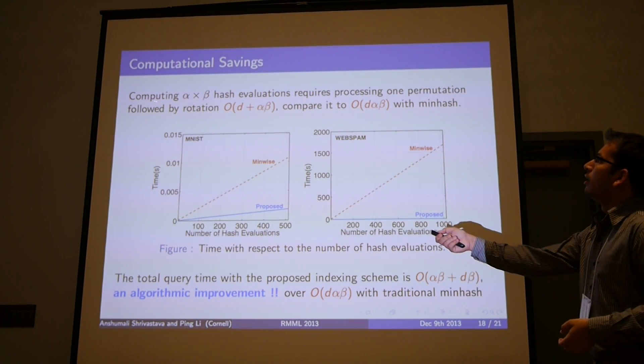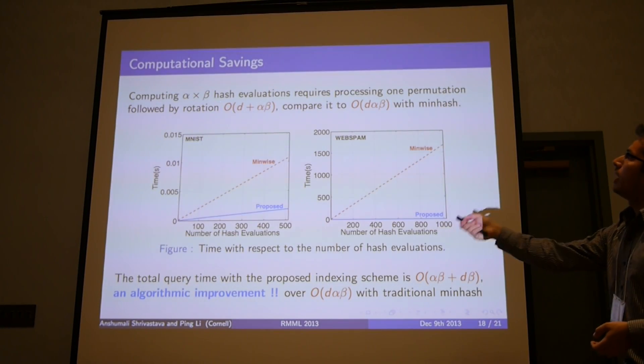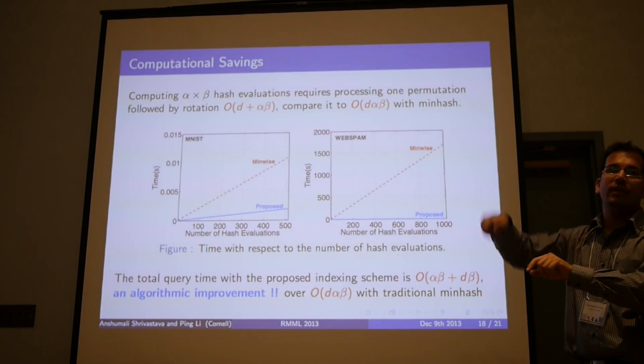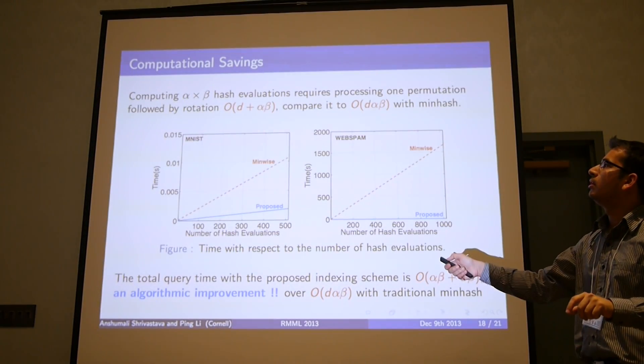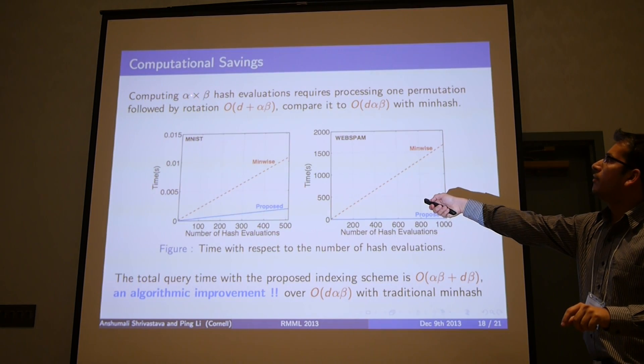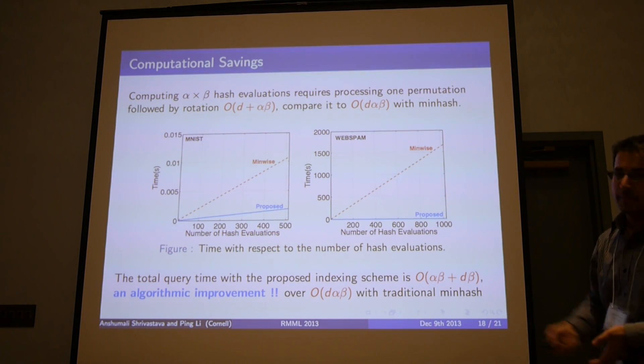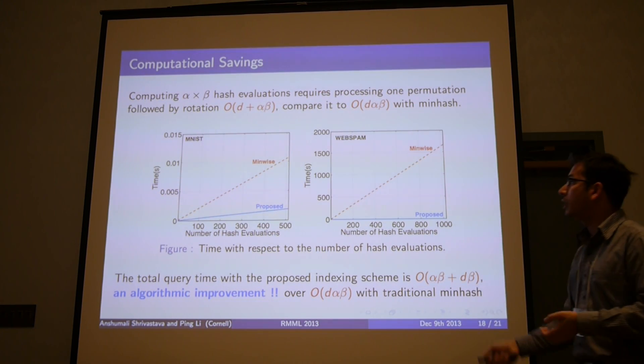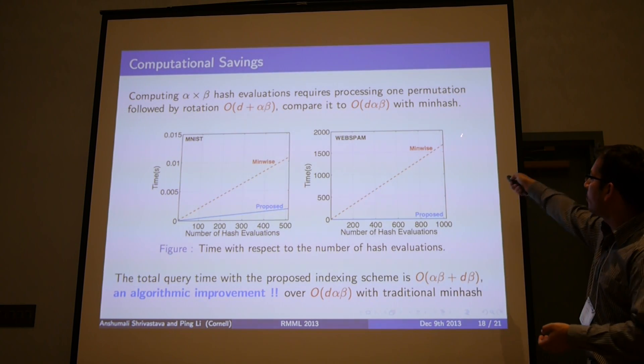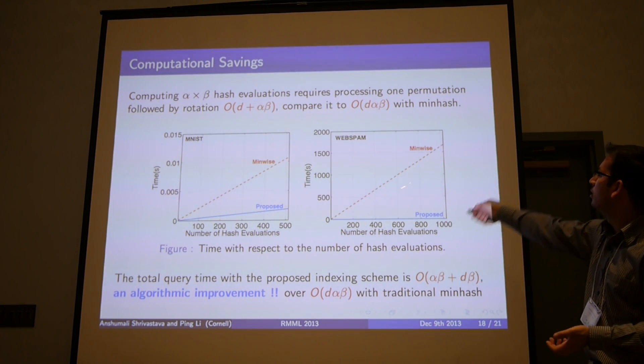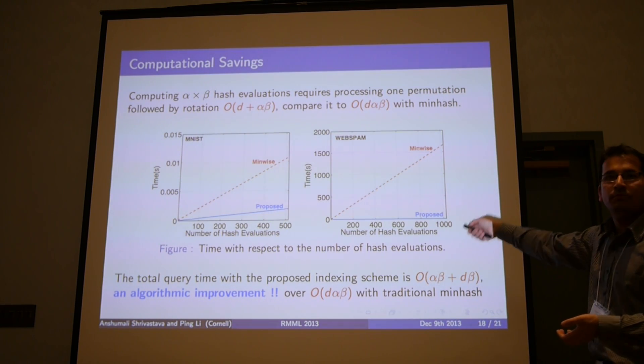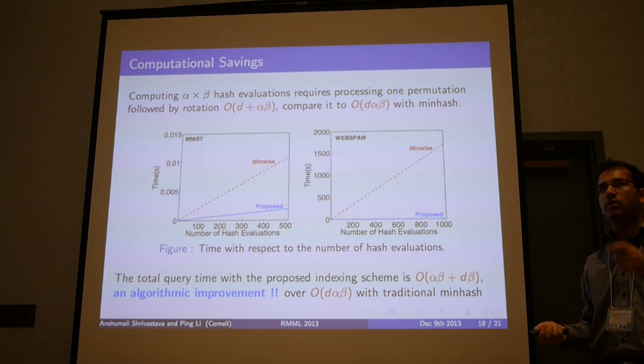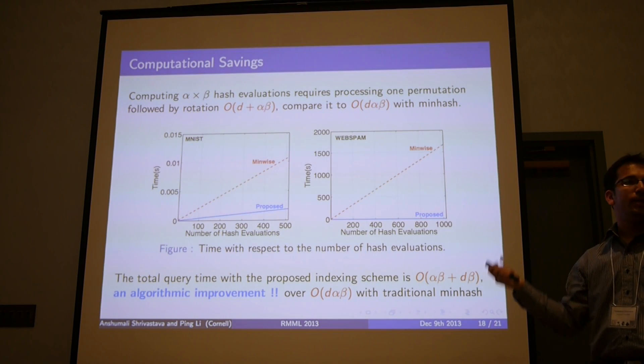What do we do? Remember we need to compute α times β hash evaluations, and our procedure requires processing one permutation, binning, and then refilling the bins, which is just big O of D operation. Computing this α times β hash signatures can be done in big O of D plus α times β. If you compare it to big O of D times α times β, which is what minwise hashing requires, it's a huge saving, especially when D is large. For example, if you see the web spam dataset, for computing roughly thousand evaluations, it's just way more than would be required. In fact, we also get an algorithmic improvement in the traditional LSH because the query complexity time dominates the total time.